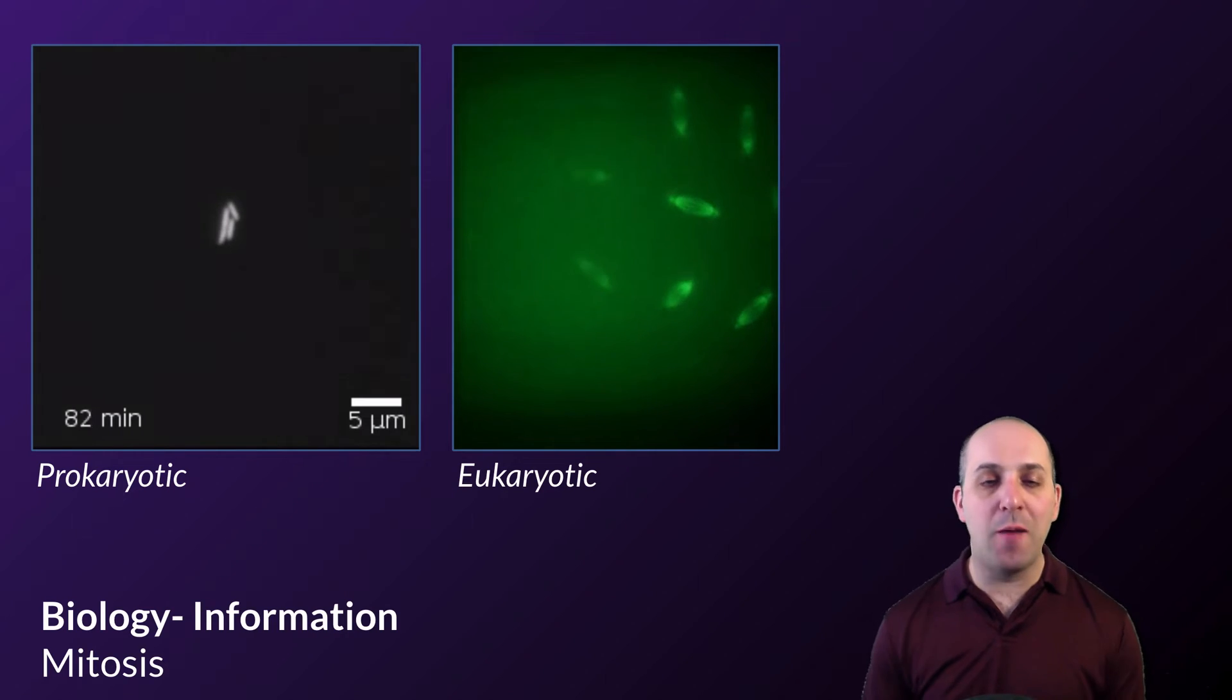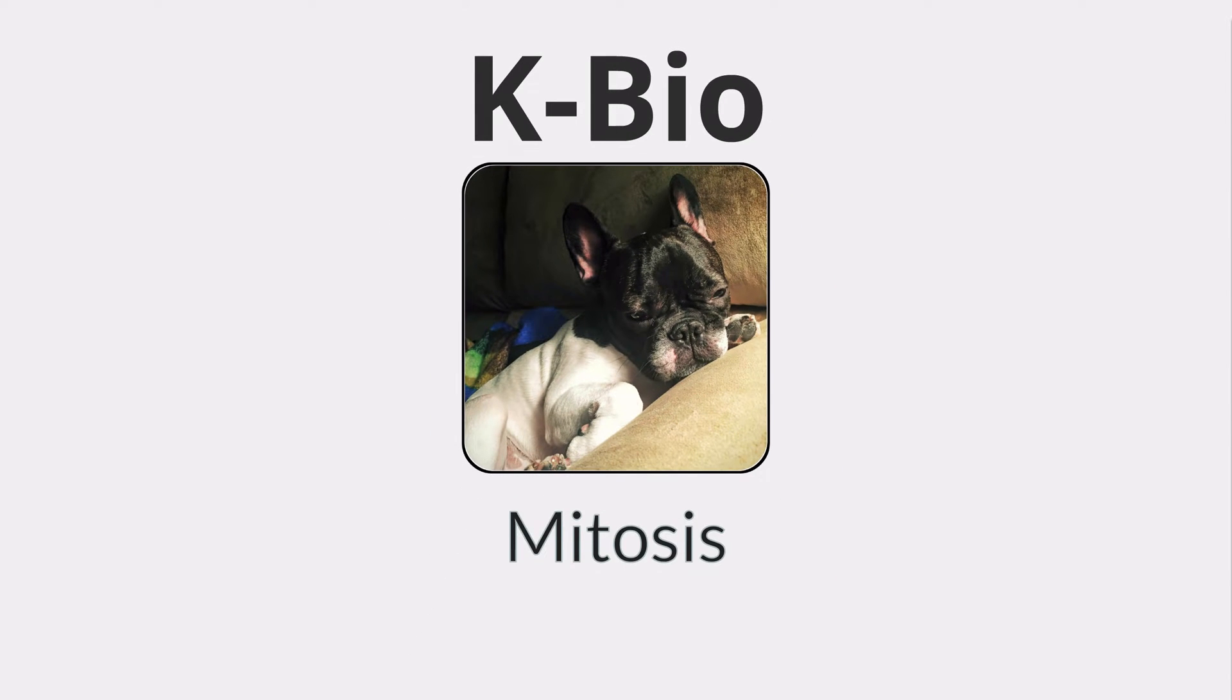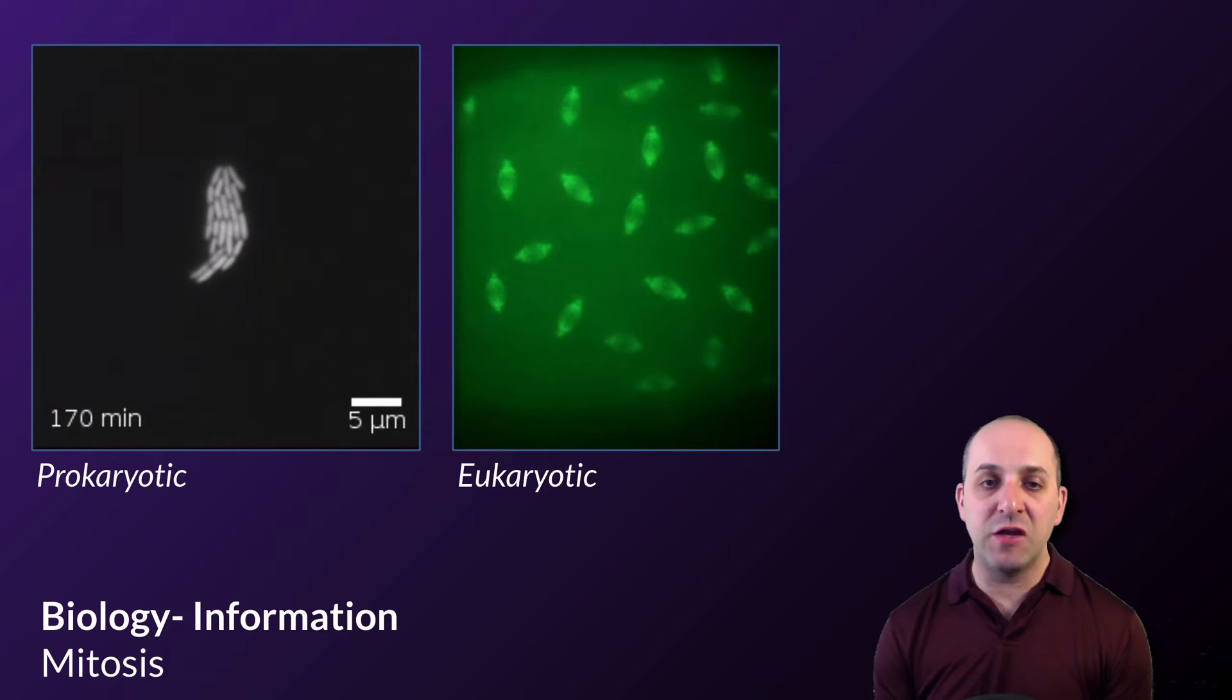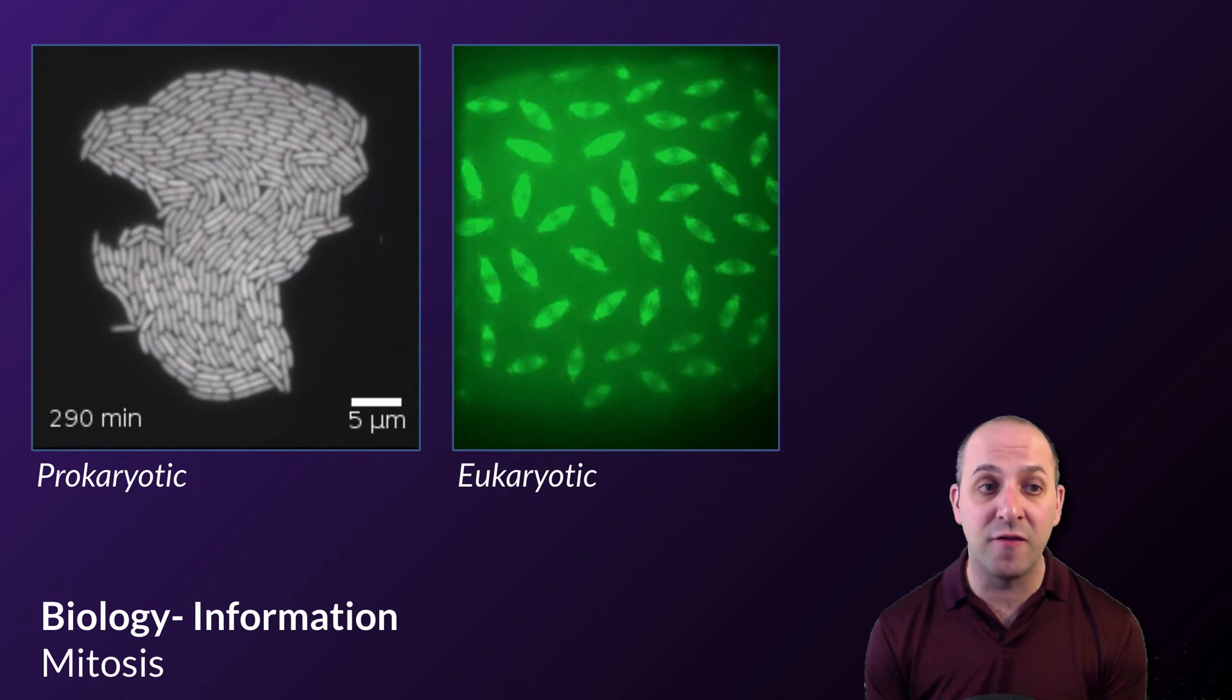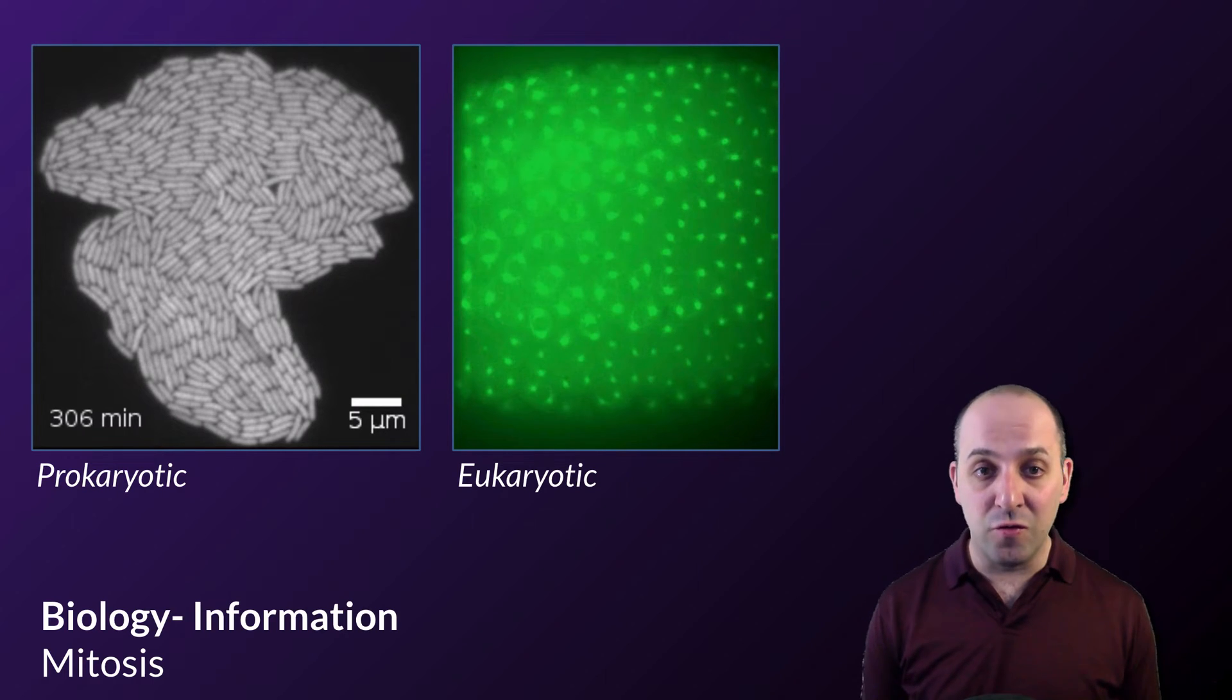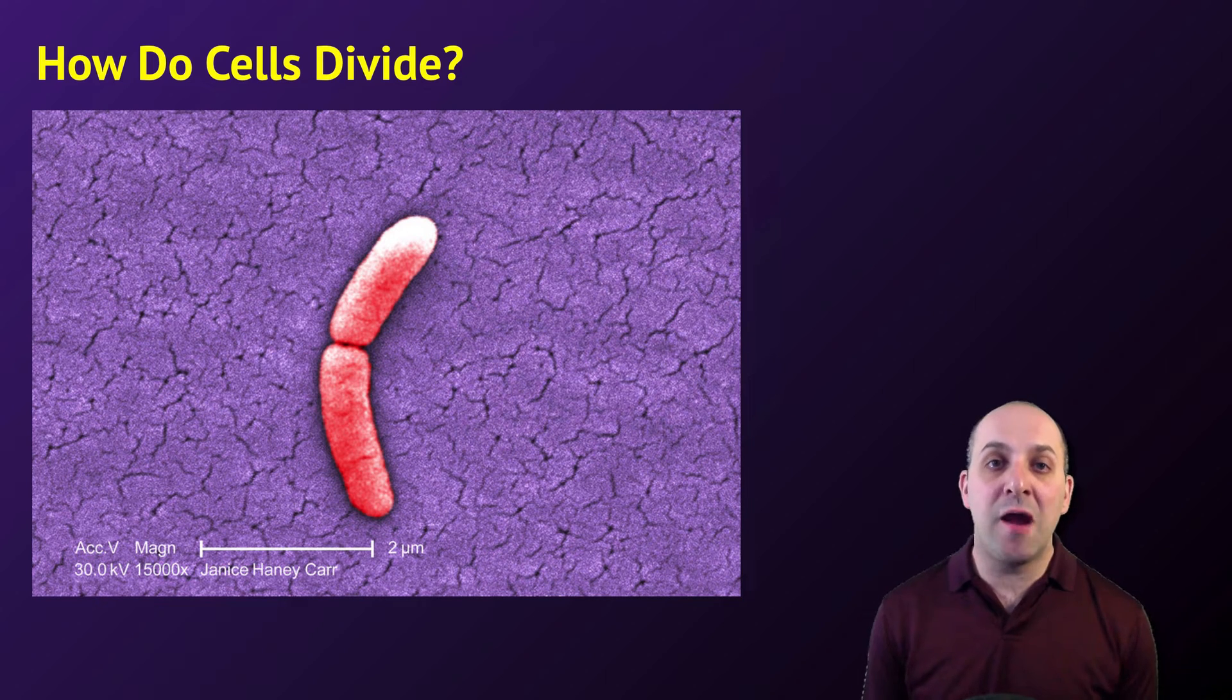Hi and welcome to our video on mitosis. What we see here are populations of prokaryotic cells and eukaryotic cells undergoing cell division. Cell division is fundamental to all cells on the planet as it is the way in which they, and by extension all living things, reproduce. The question in this video that we're going to look at is how do cells divide. Specifically, we'll be looking at how eukaryotic cells divide.